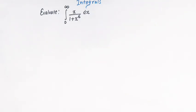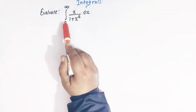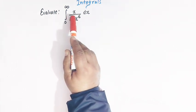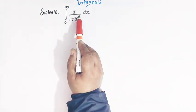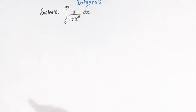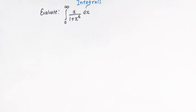Hello viewers. In today's class we are once again going to solve an important problem from definite integrals involving the application of beta and gamma functions. We'll solve this important integral from 0 to infinity with integrand x divided by 1 plus x raised to 6. We'll see how easily we can solve this integral by making use of the concept of Euler's integrals, that is the beta and gamma functions. So let us start.